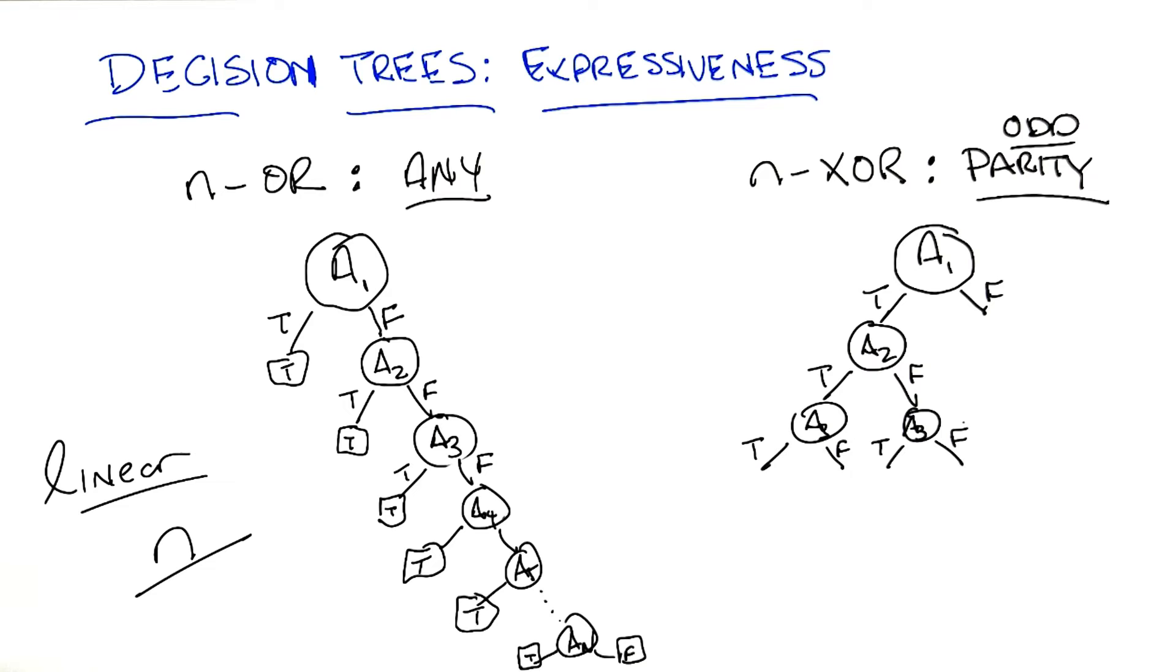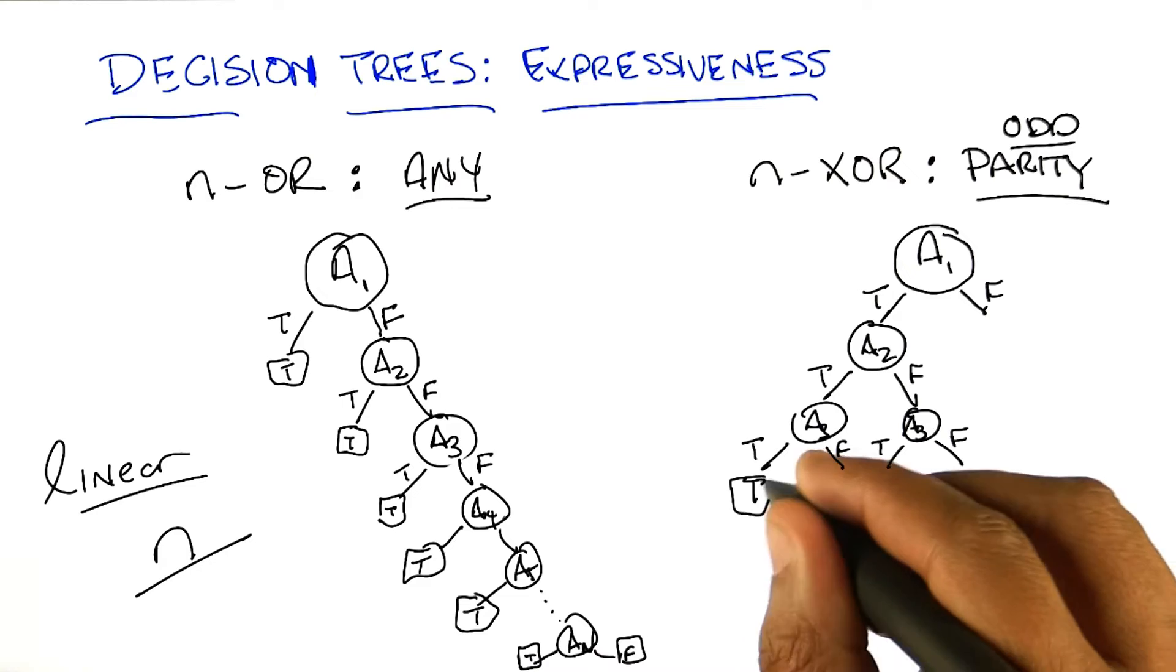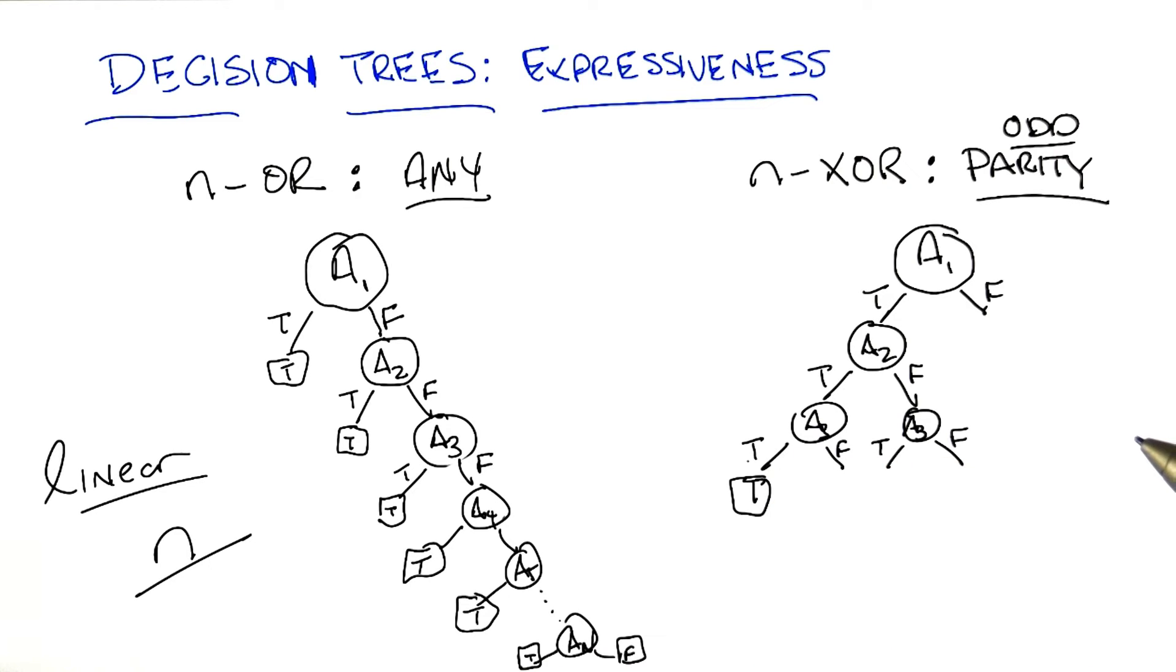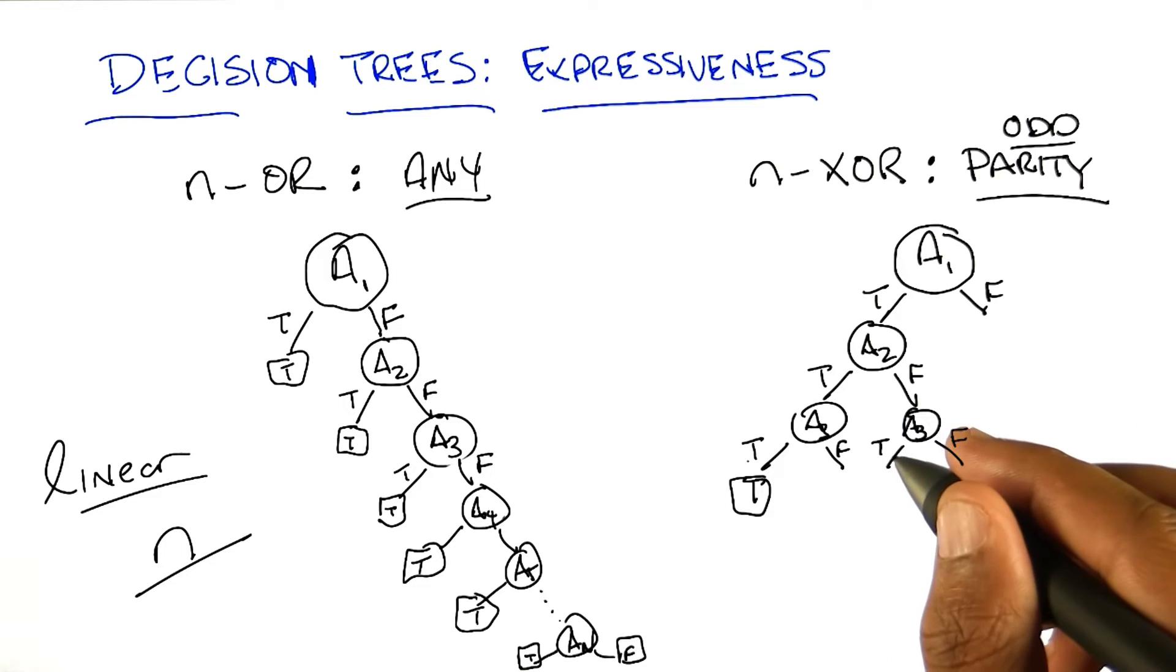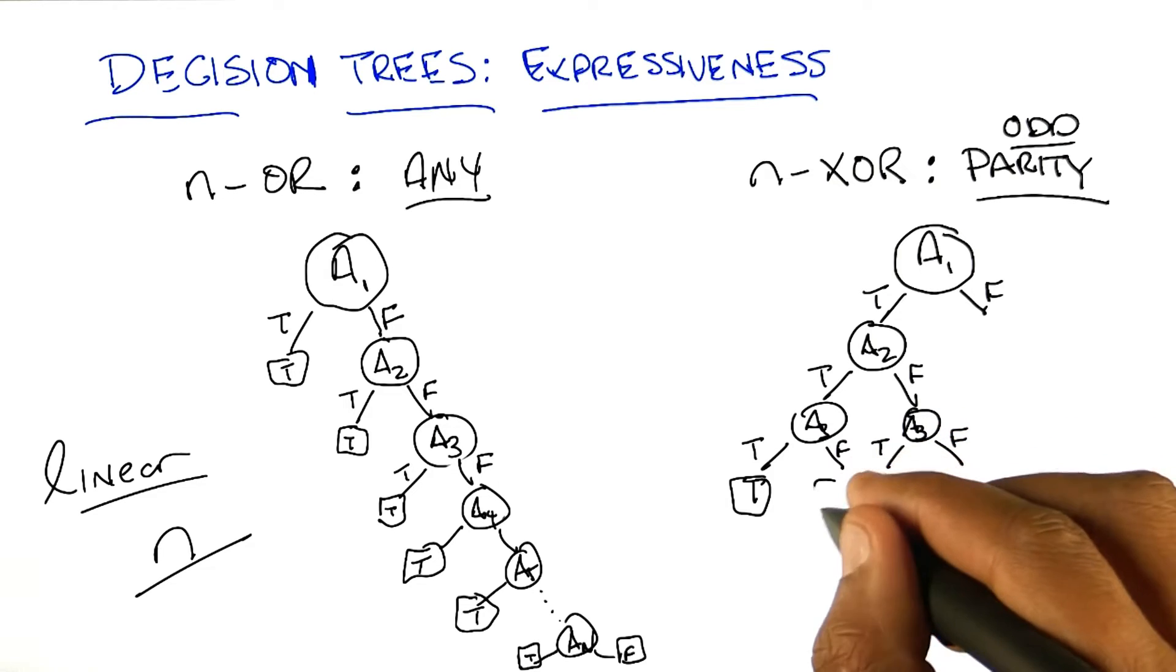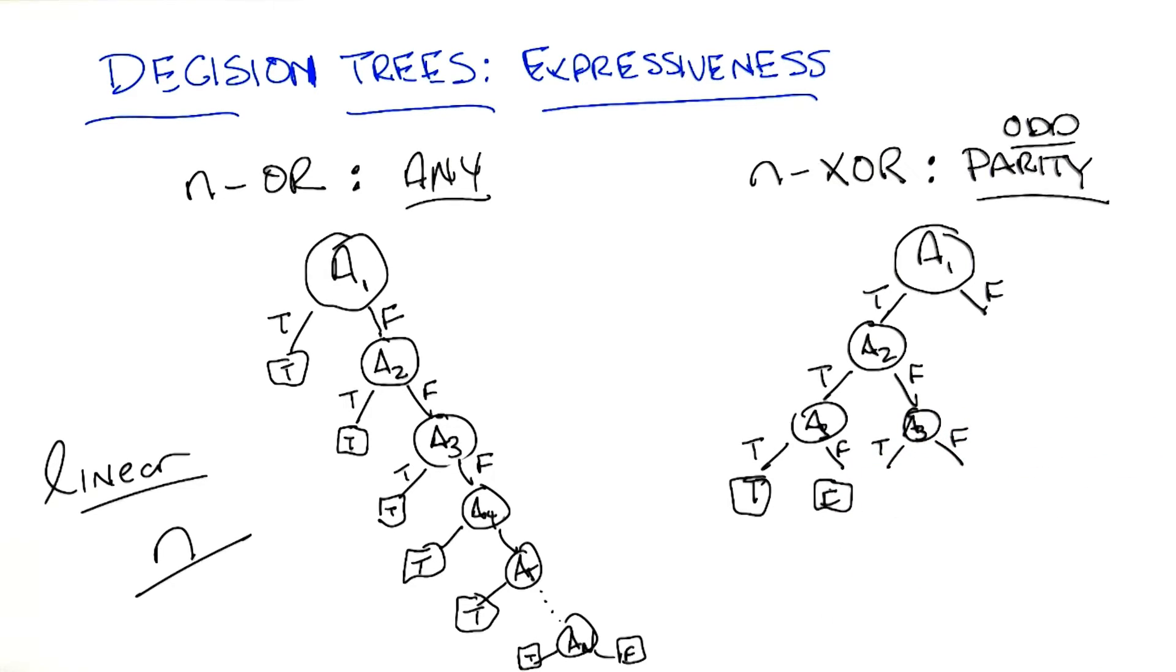And I'm already running out of room, so let's pretend there's only three variables. What's the output? So the far left, there's three trues, which is odd, so the output is true. The next leaf over, only two trues. A1 is true, A2 is true, but A3 is false. So that's two trues, which is even, so the answer is false.